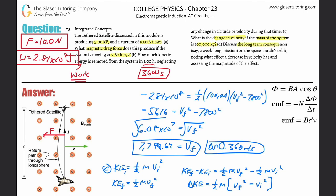Letter d: discuss a long-term consequence for a week-long mission. If the velocity keeps decreasing, eventually it goes to zero — and then the satellite crashes. That's the long-term consequence. Thanks for tuning in, hopefully that helps, and I'll see you in the next problem.